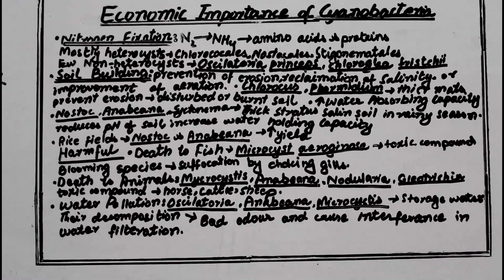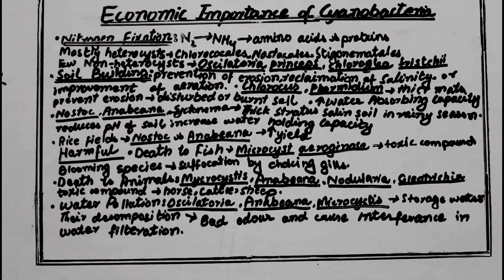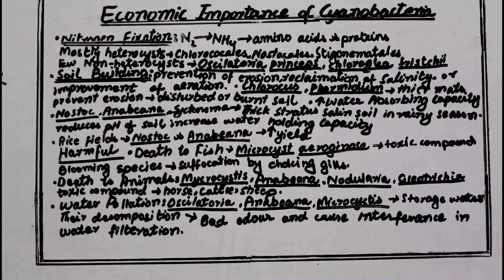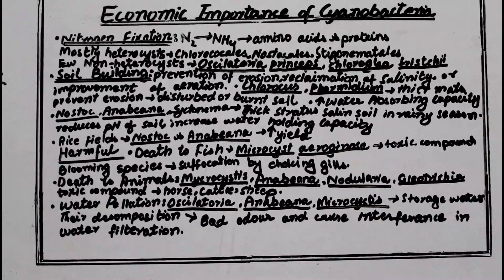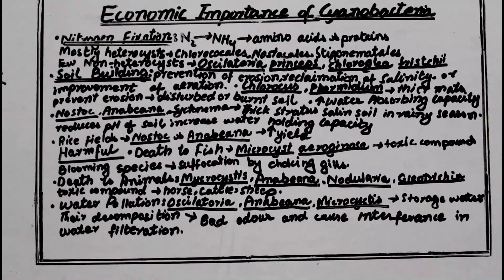The presence of Nostoc and Anabaena in rice fields increases the yield. Through preventing erosion, reclamation of soil, nitrogen fixation, and all these processes together, they increase the production and yield of rice fields. These were all the beneficial roles of blue-green algae.